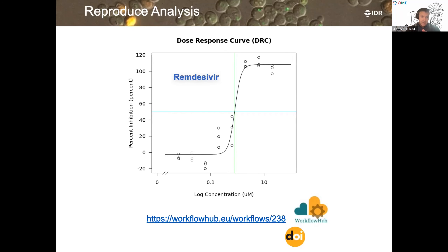Associated with that study — which had over 300 compounds — we also developed a Shiny app written in R, linked to the data. People can explore and build dose-response curves in a very dynamic manner, rather than just taking at face value what is written in the paper. They can make their own minds up.